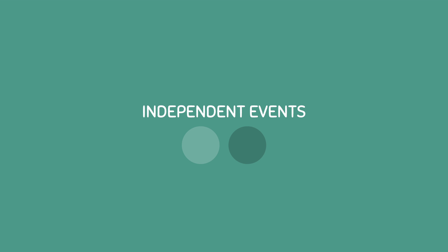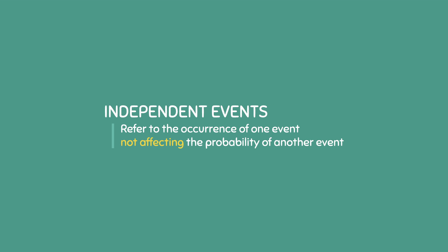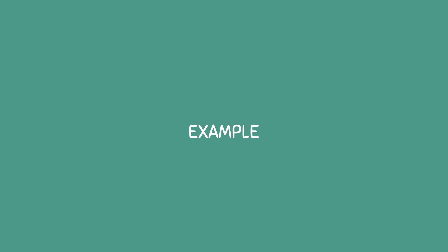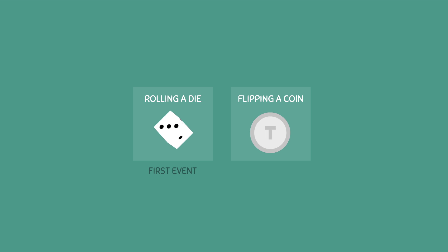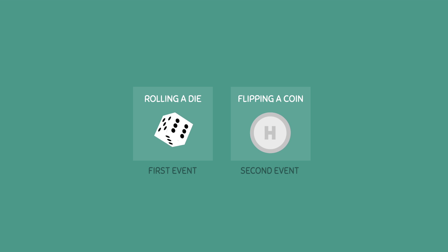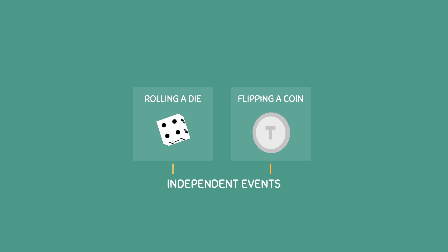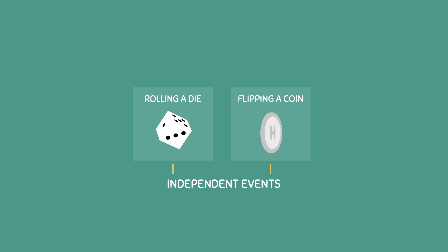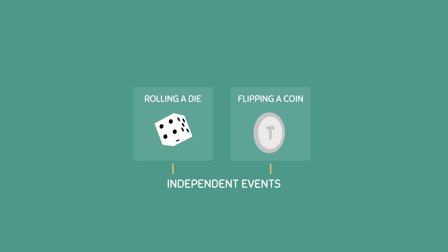Independent events refer to the occurrence of one event not affecting the probability of another event. For example, let's say we are rolling a die and flipping a coin. Both of these are two separate events. Because the outcome of the first event does not affect the outcome of the second event, these events are said to be independent events. In other words, rolling a 6 doesn't increase or decrease the probability of a coin landing on heads or tails.